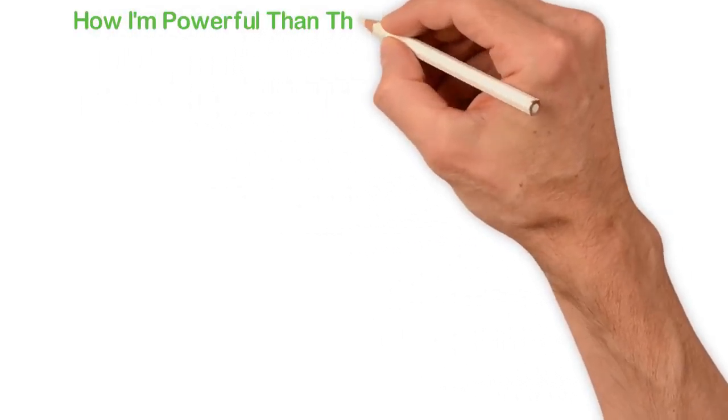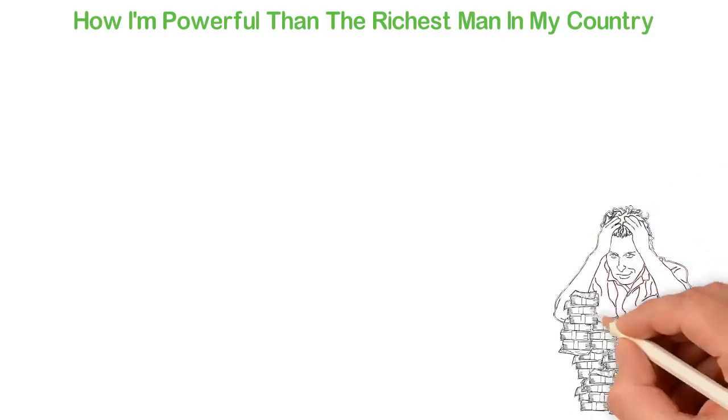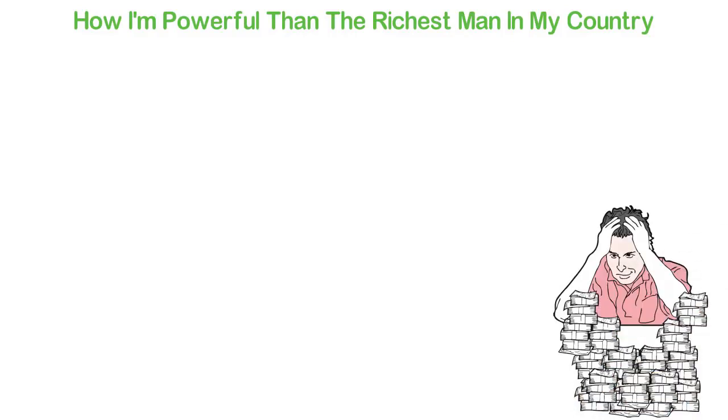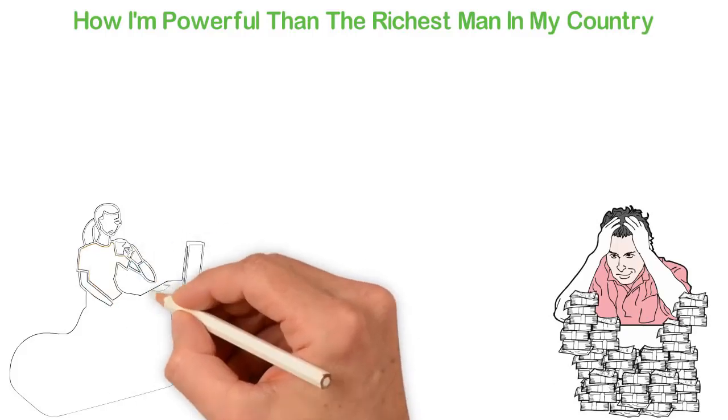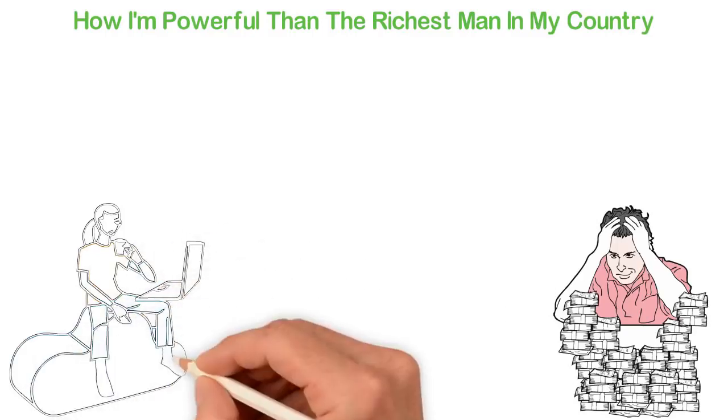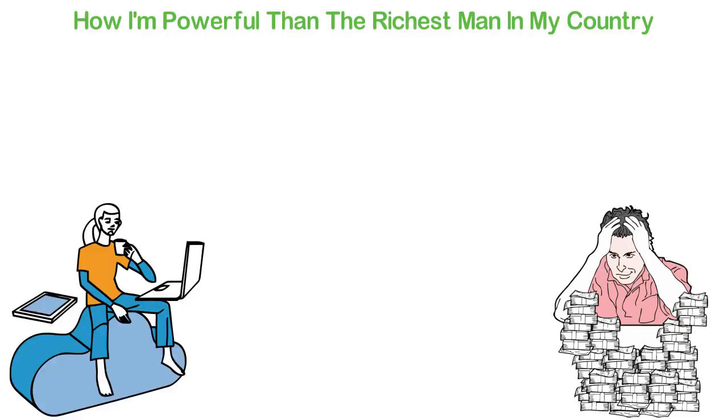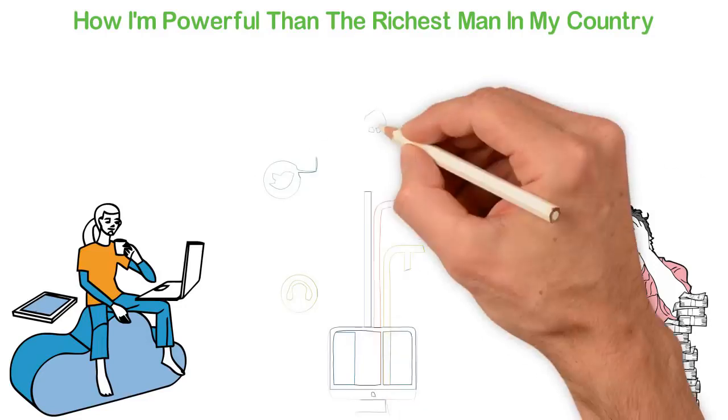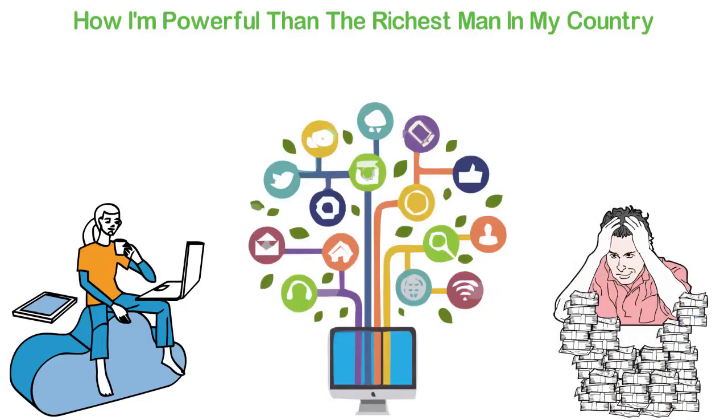How I'm more powerful than the richest man in my country: I once heard an interview of the richest man in my country. He was complaining about the fact that a certain country didn't allow his products to be sold in their country. But here I am, I run a media company that reaches people in more than 20 countries and can reach any other country I want at any time, as long as they use the internet in that country. You see how I'm more powerful than the richest man in my country? That's the wonder of the internet.